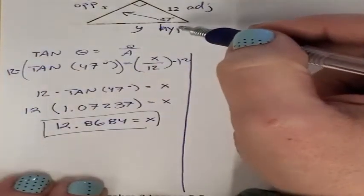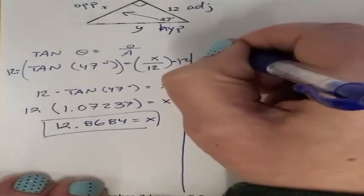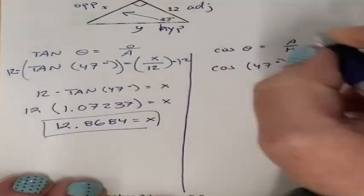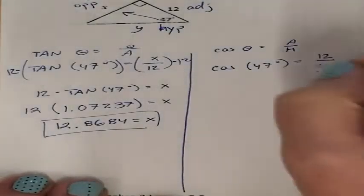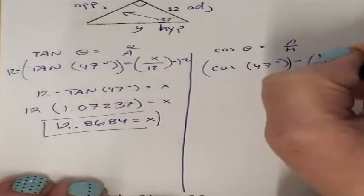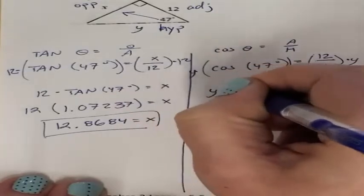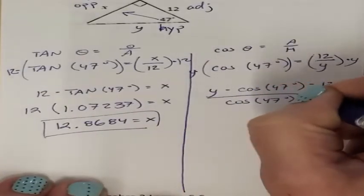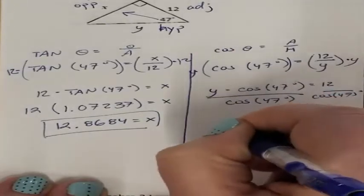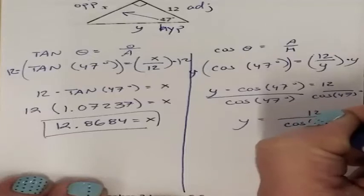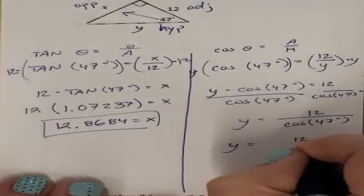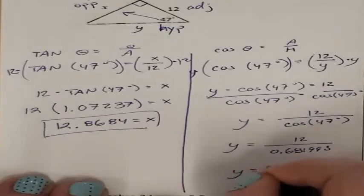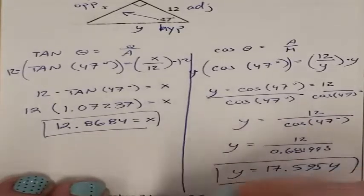Now I need my Y, my hypotenuse. Adjacent and hypotenuse is cosine. Cosine of 47 degrees equals 12 over my missing Y. I multiply both sides by Y, then divide both sides by cosine of 47 degrees, giving me Y equals 12 divided by cosine of 47 degrees. Cosine of 47 degrees is 0.681998, and 12 divided by that is 17.5954 — that is my missing Y value.